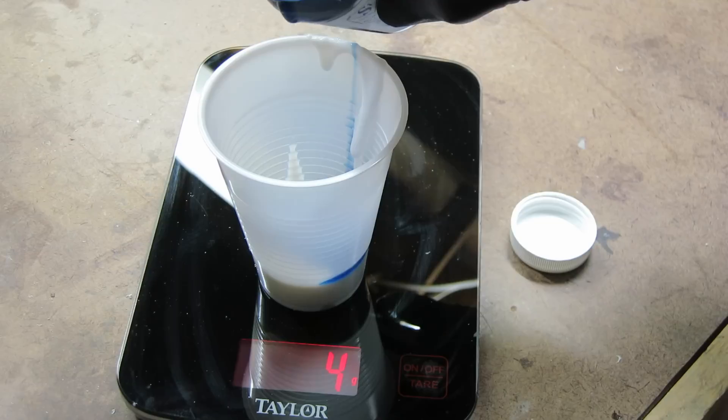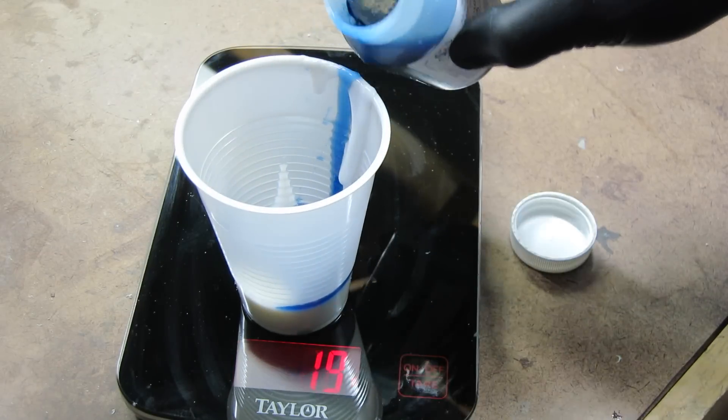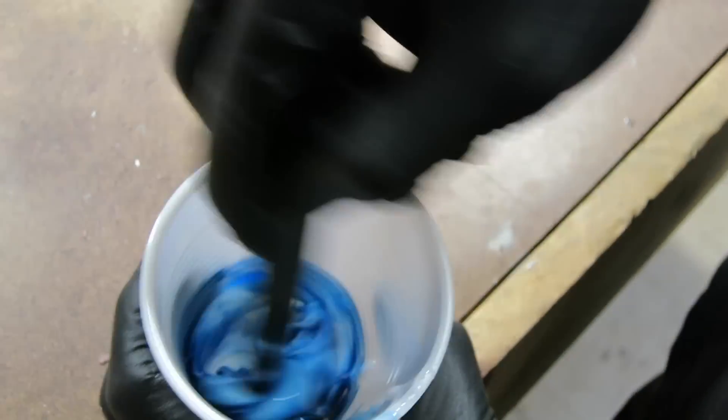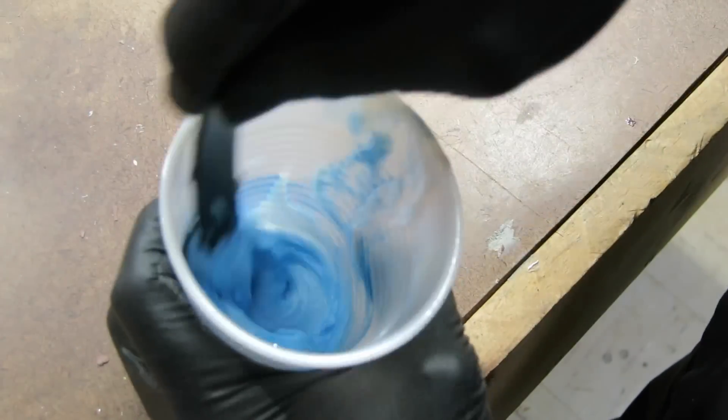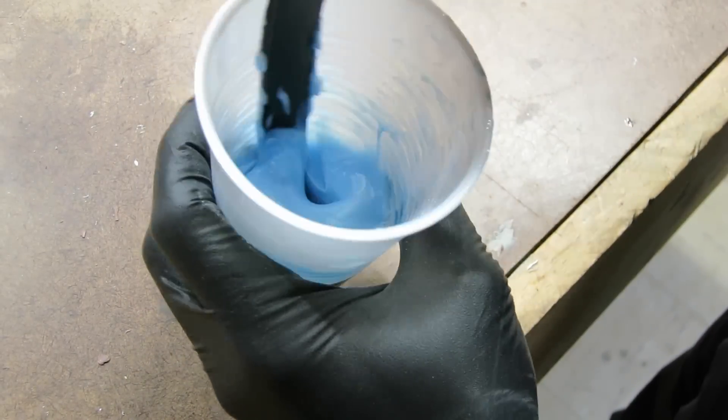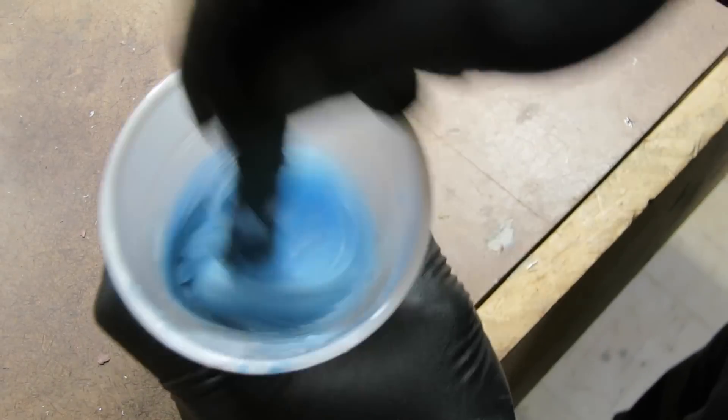Here I'm mixing the appropriate amount of activator. I have a scale, it's all measured out in grams, so I can mix in the right amount. I mix it up really good, thoroughly, and then it's going to go into the vacuum chamber.